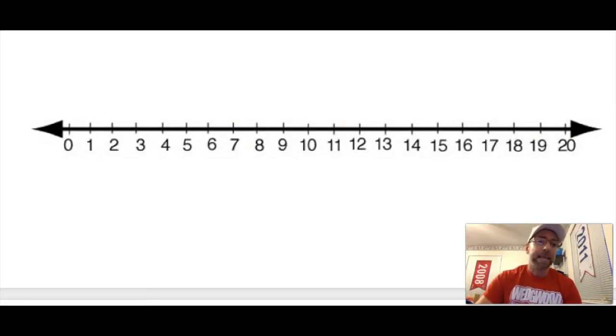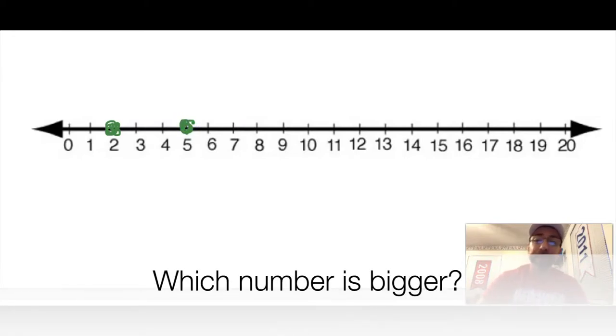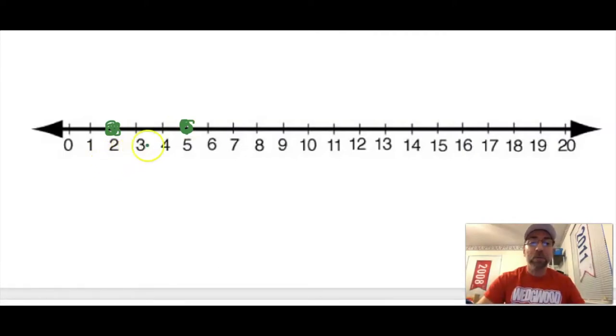Let's see, maybe I want to take a look at the number two and the number five. Now I can ask which number is bigger, the two or the five? Well, the number five is bigger because if I start at zero, that's my smallest number. One, two, three, four, five. I'm getting bigger. So when I travel down my number line, the bigger the numbers get. So the number five is bigger than two.